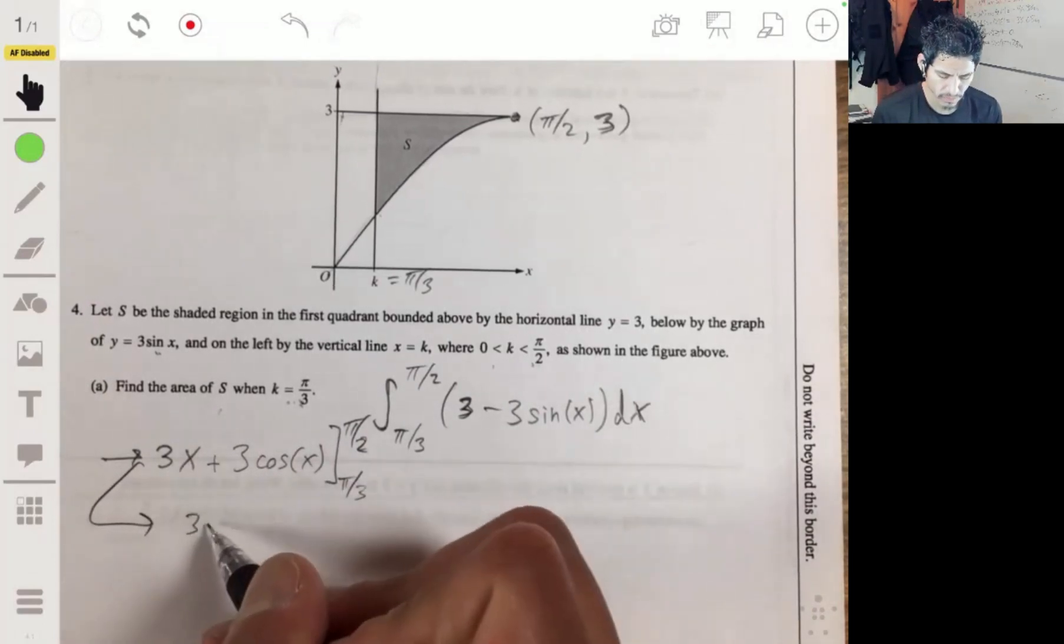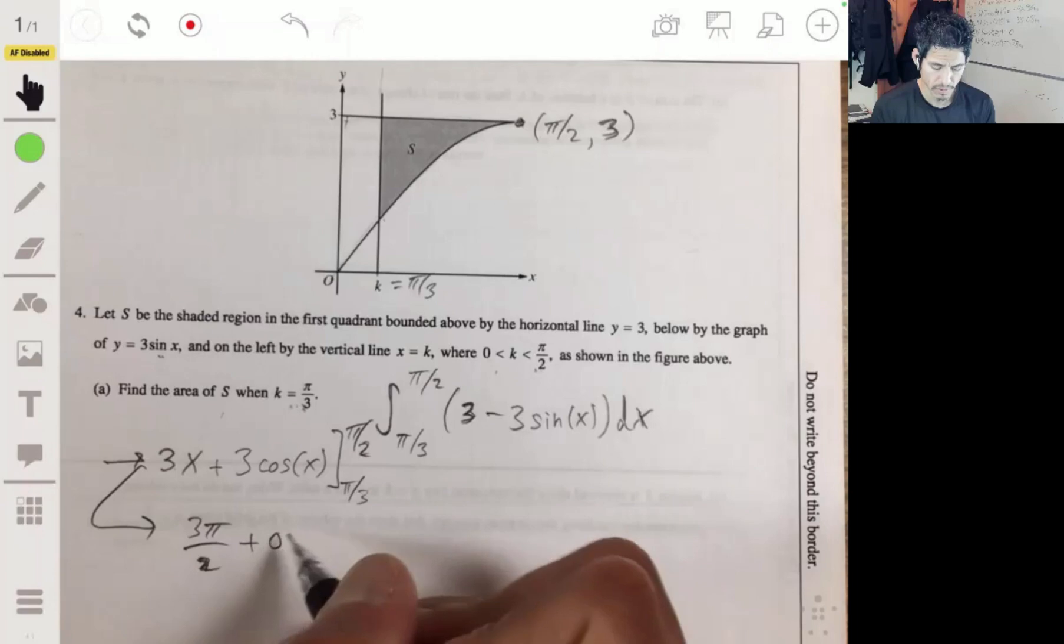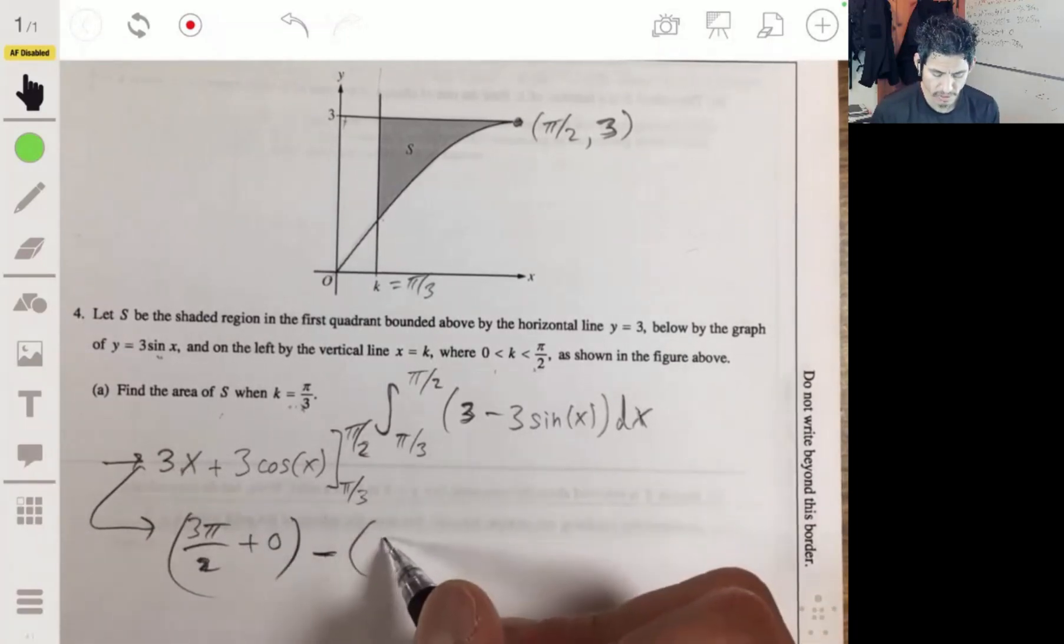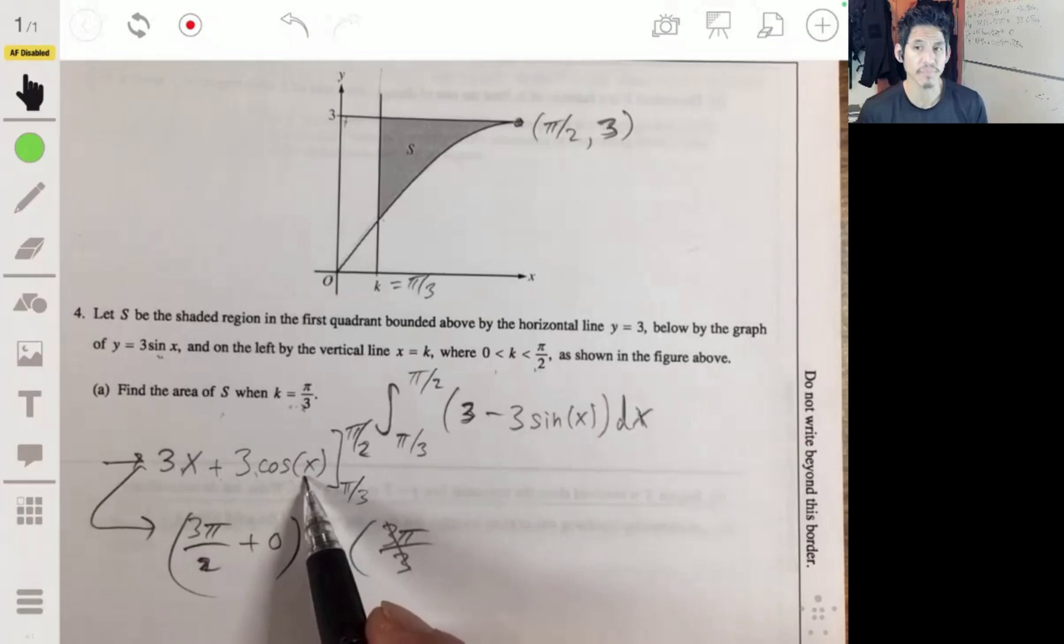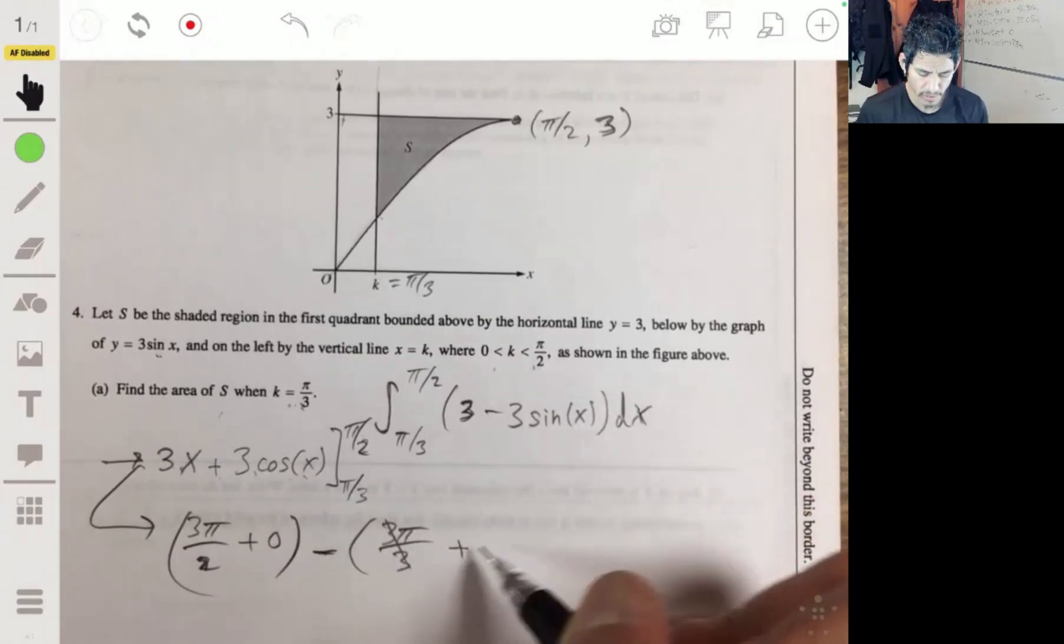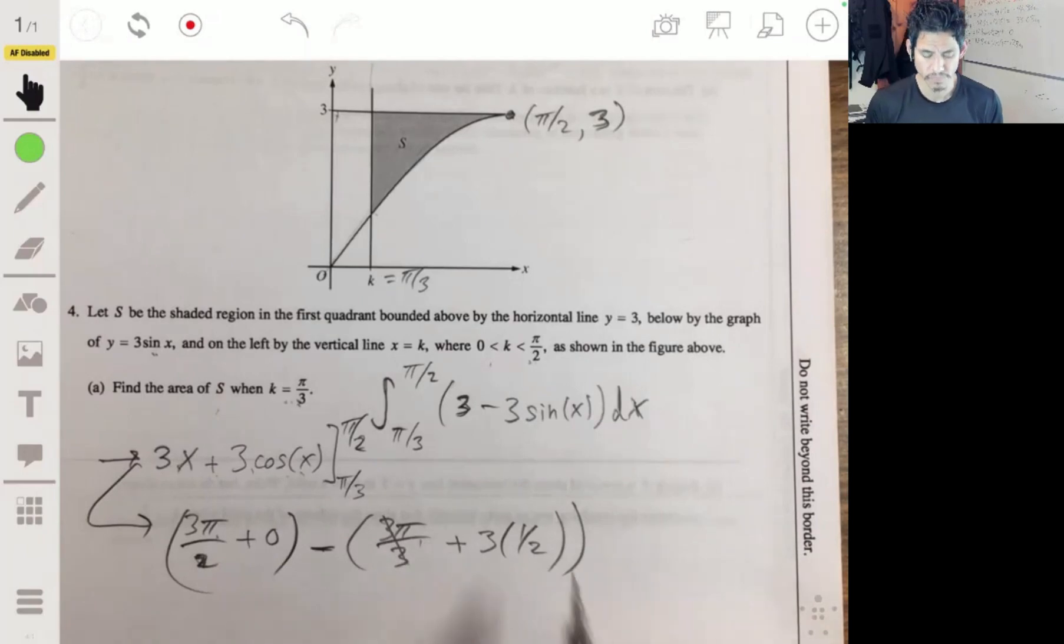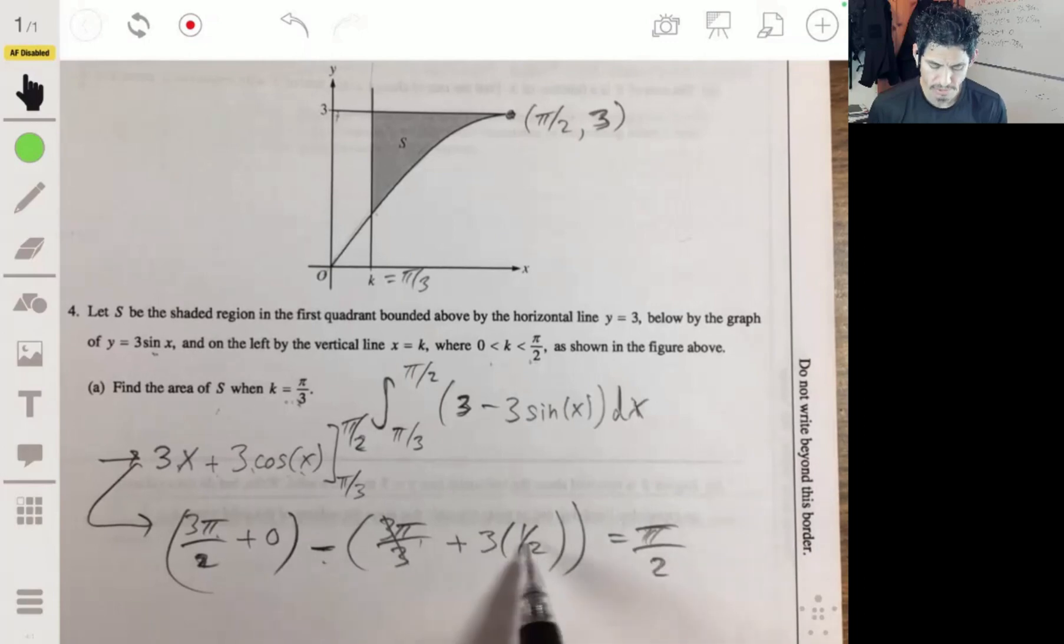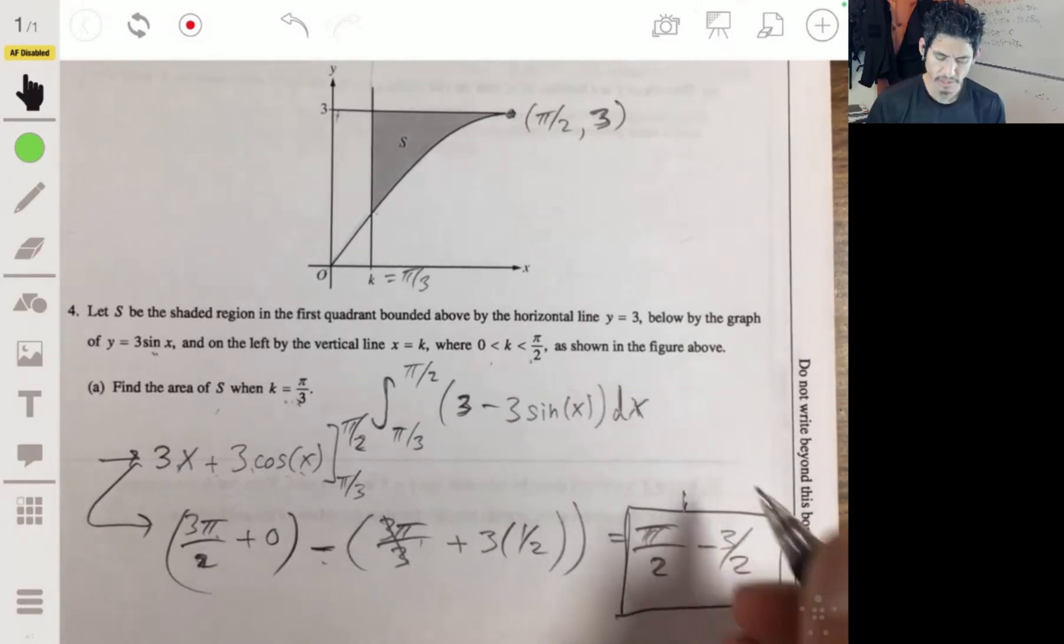So 3 times pi over 2, plus 3 times the cosine of pi over 2, which is 0, minus 3 times pi over 3, so 3 pi over 3, which is just going to be pi, plus 3 times the cosine of pi over 3. Cosine of pi over 3 is 1 half. So we have 3 pi over 2 minus pi, which will be pi over 2, minus 3 halves. And there you go, that's all she wrote for that one.